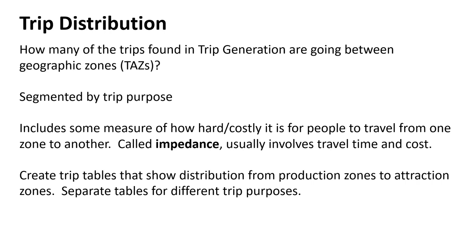Cost is also part of impedance. Going to Chicago, you can drive — there's a mileage cost — versus taking the South Shore for $9.40. The train may take 45 minutes longer, but driving means paying for parking and dealing with the stress of the loop. All of that — cost, time, and frustration — gets boiled down into an impedance factor.